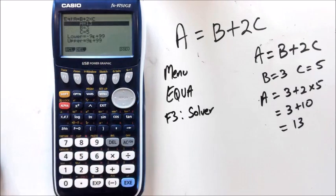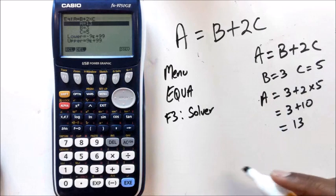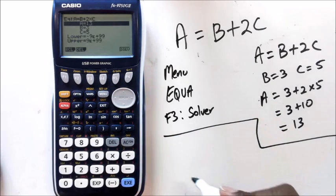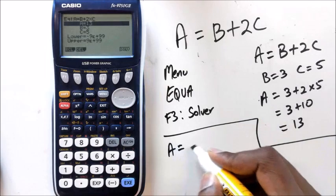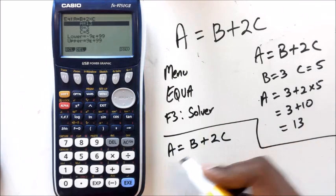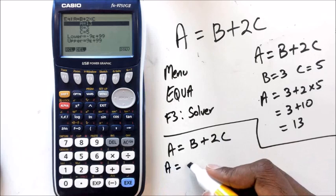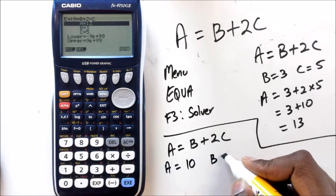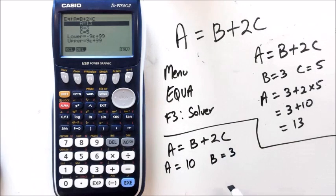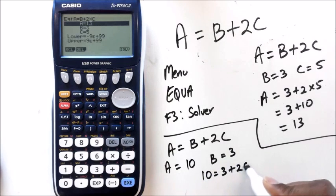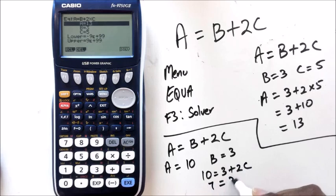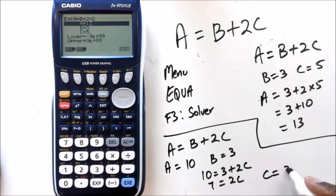Okay, so let me show you the other way. So if I have A equals B plus 2C, let's say A is equal to 10, B equals 3. If that's the case, I've got 10 equals 3 plus 2C, 7 equals 2C. So I should get C as 3.5.